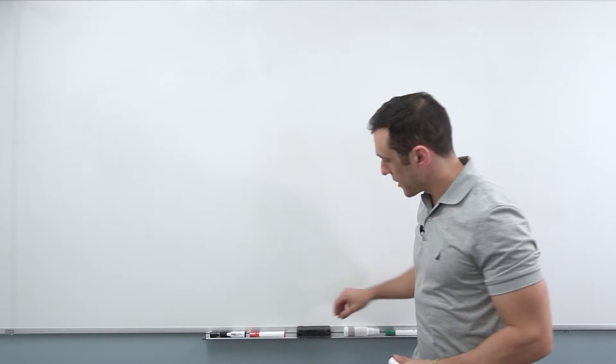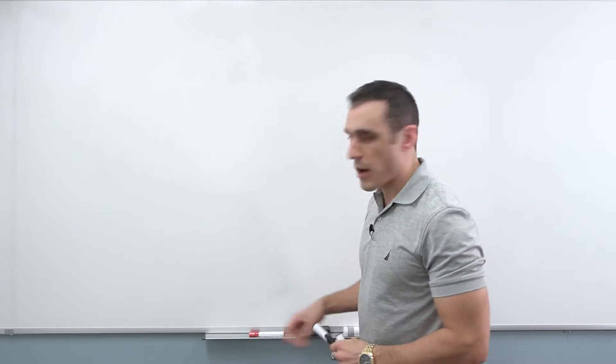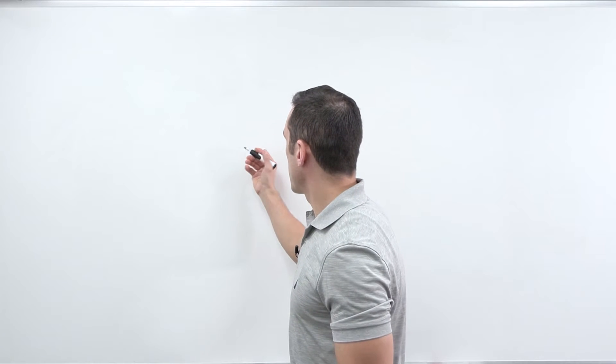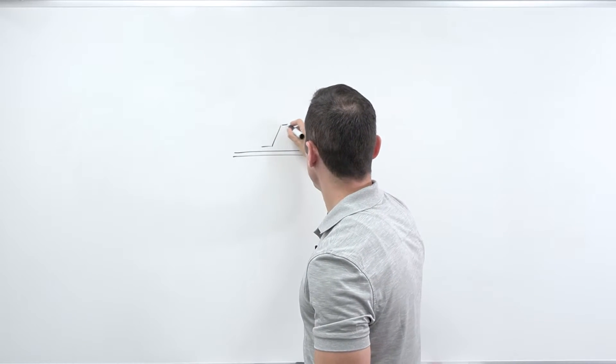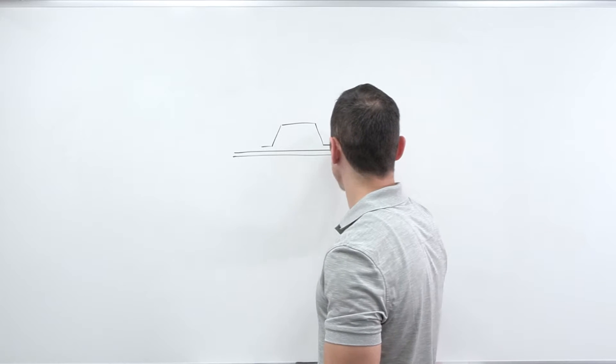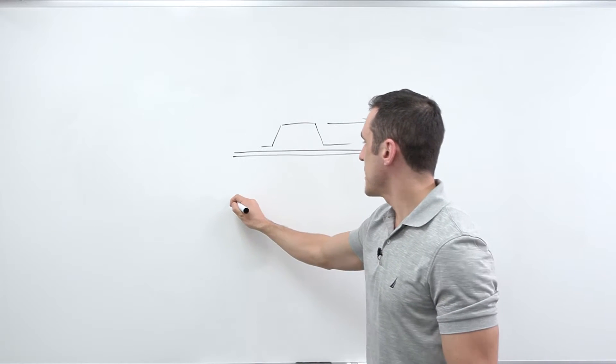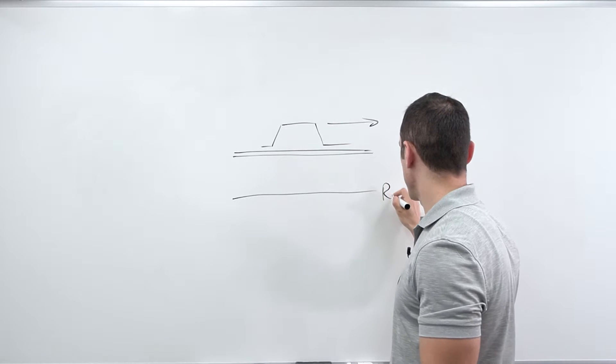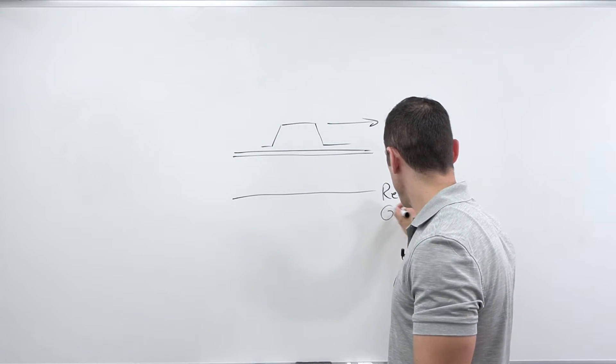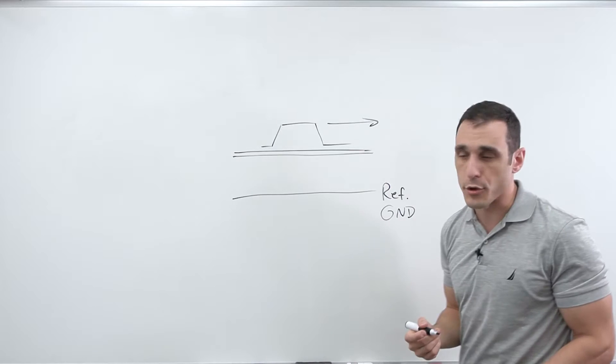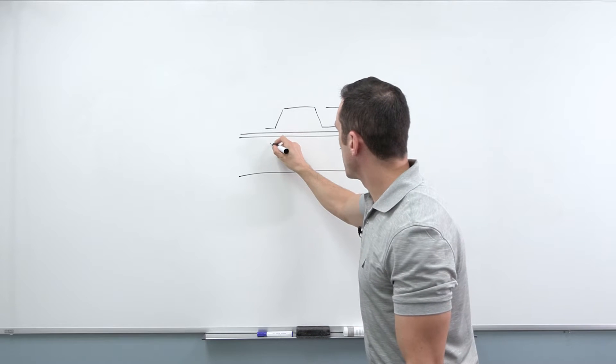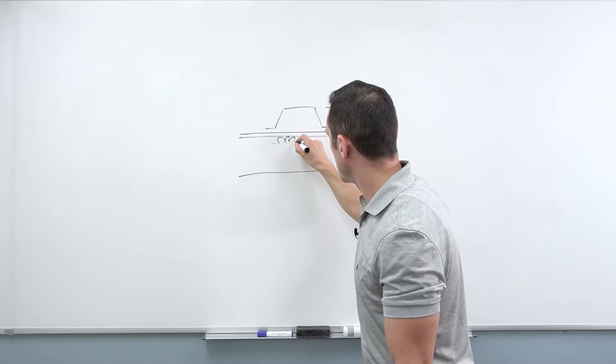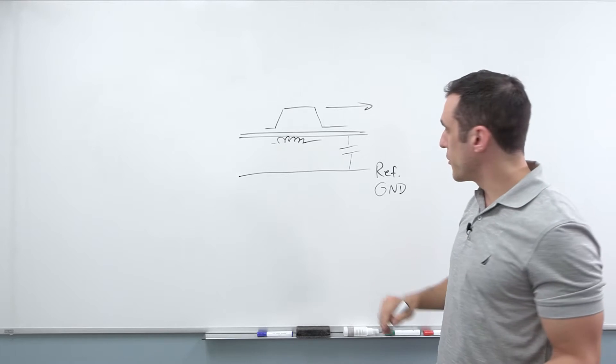We want to talk about something in transmission line theory called the propagation constant. If you remember from previous videos, generally what we're looking at with the transmission line is we have our line and we have some signal traveling on it. It's going this direction and then we have some reference plane. I'll just write it out as REF or generally GND for ground. And there is some capacitance between the line and ground and the line itself has some self-inductance. It's a pretty poor inductor signal, but we'll go with it.